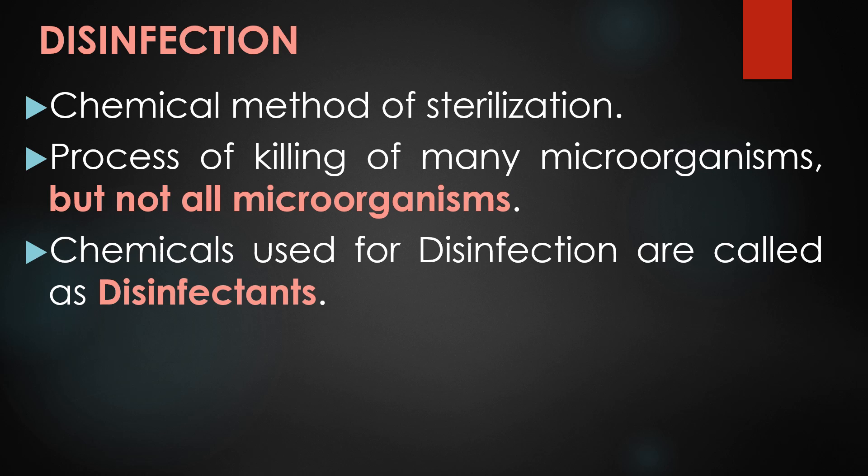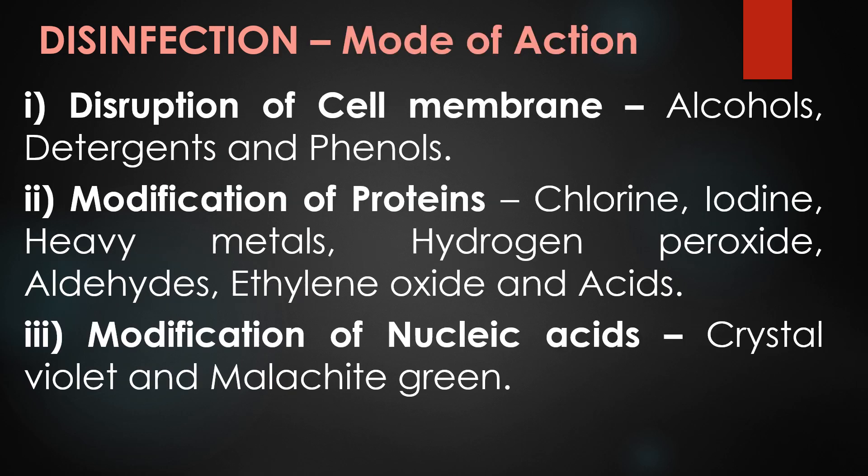The chemicals used for disinfection are called disinfectants. The modes of action of disinfectants are: first, disruption of cell membrane; second, modification of proteins; and third, modification of nucleic acids. The disinfectants involved in the disruption of the cell membrane are alcohols, detergents, and phenols.